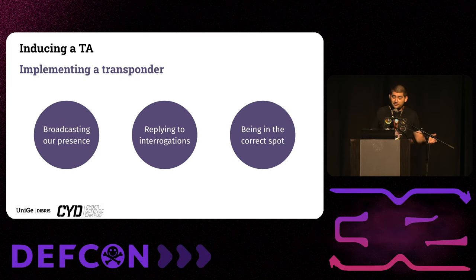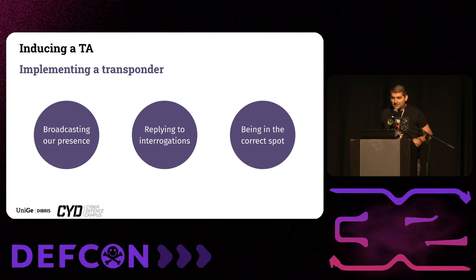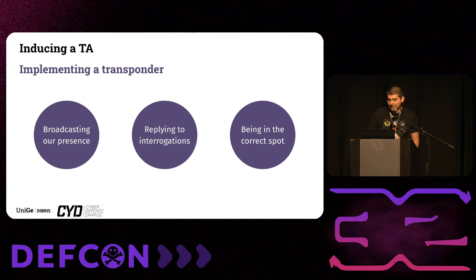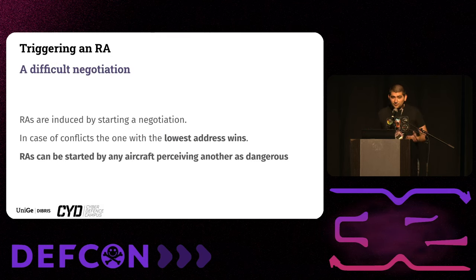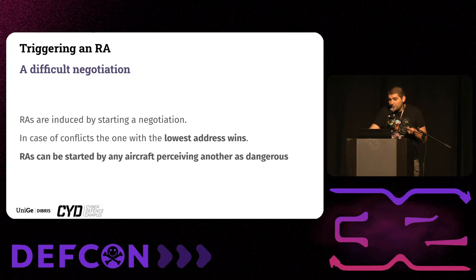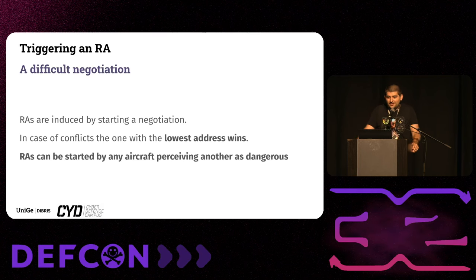To get a TA, you need to do three key things: broadcast your presence as an aircraft, reply correctly to interrogations reporting the correct altitude and position, and be at the correct range and altitude with a consistent identity. The second attack is triggering a Resolution Advisory. An RA happens after a TA — you start a negotiation telling the other aircraft you perceive it as dangerous. The conflict resolution algorithm gives the win to the aircraft with the lowest address, so as an attacker you can always determine whether the victim aircraft climbs or descends.